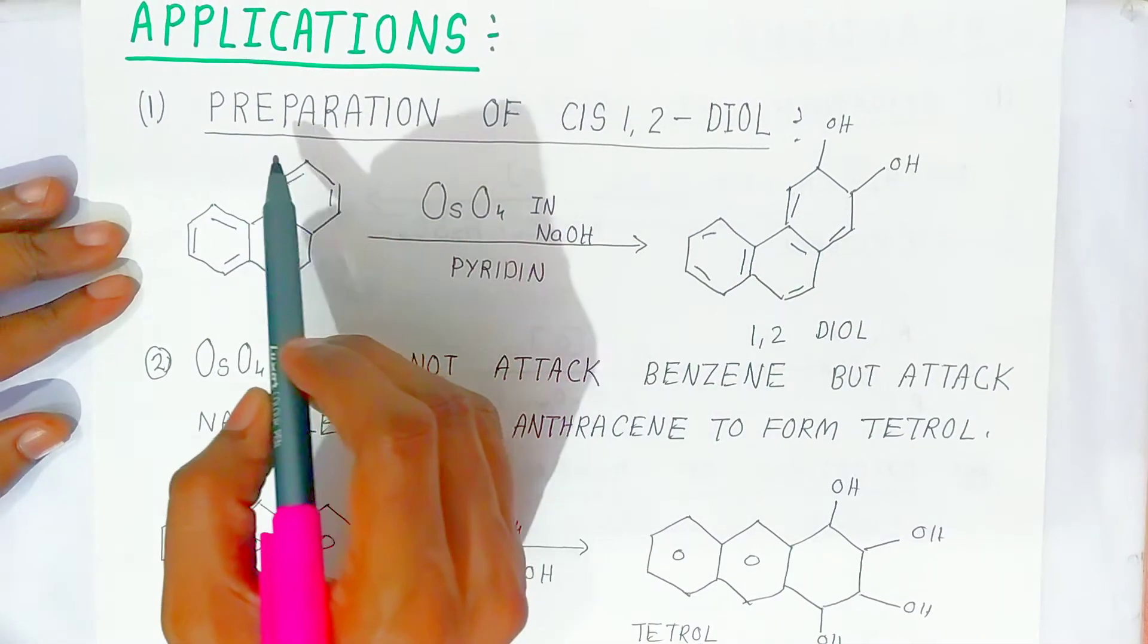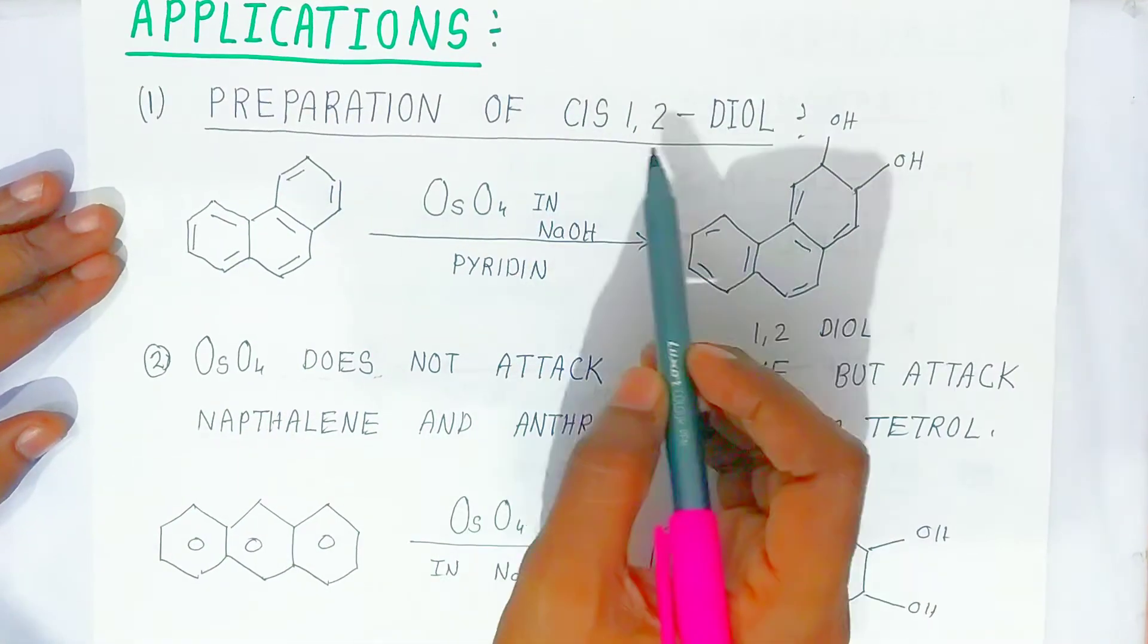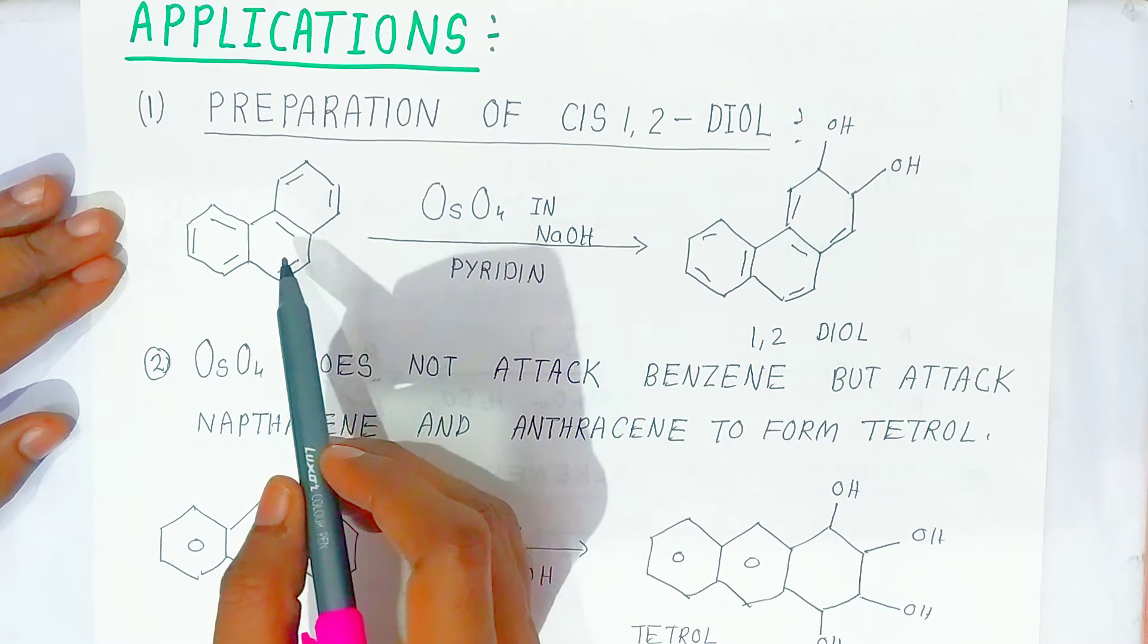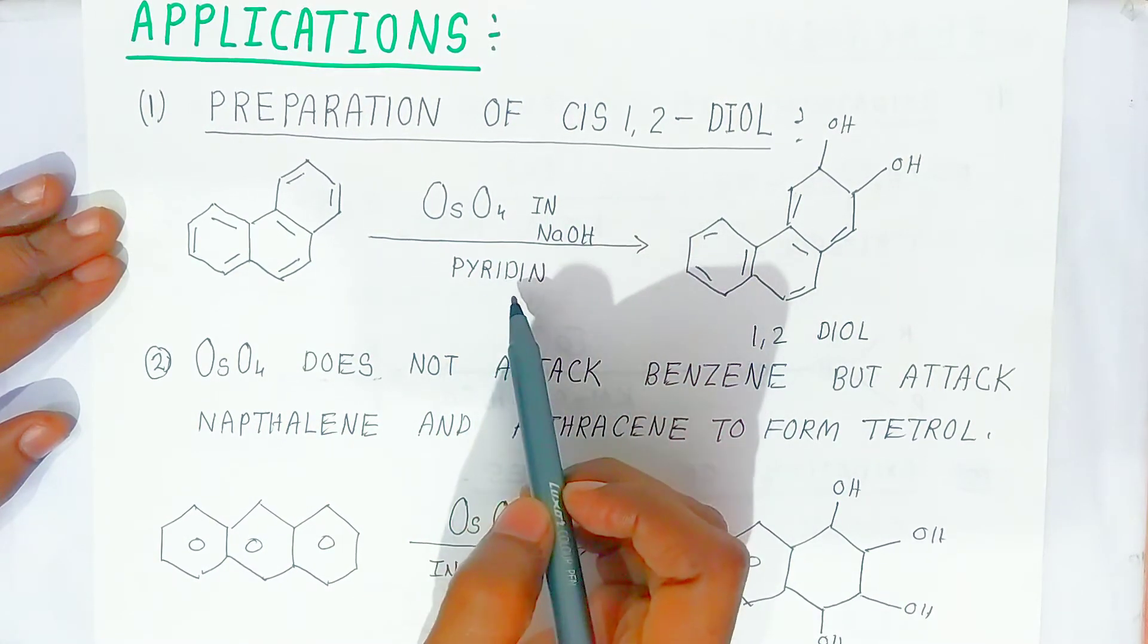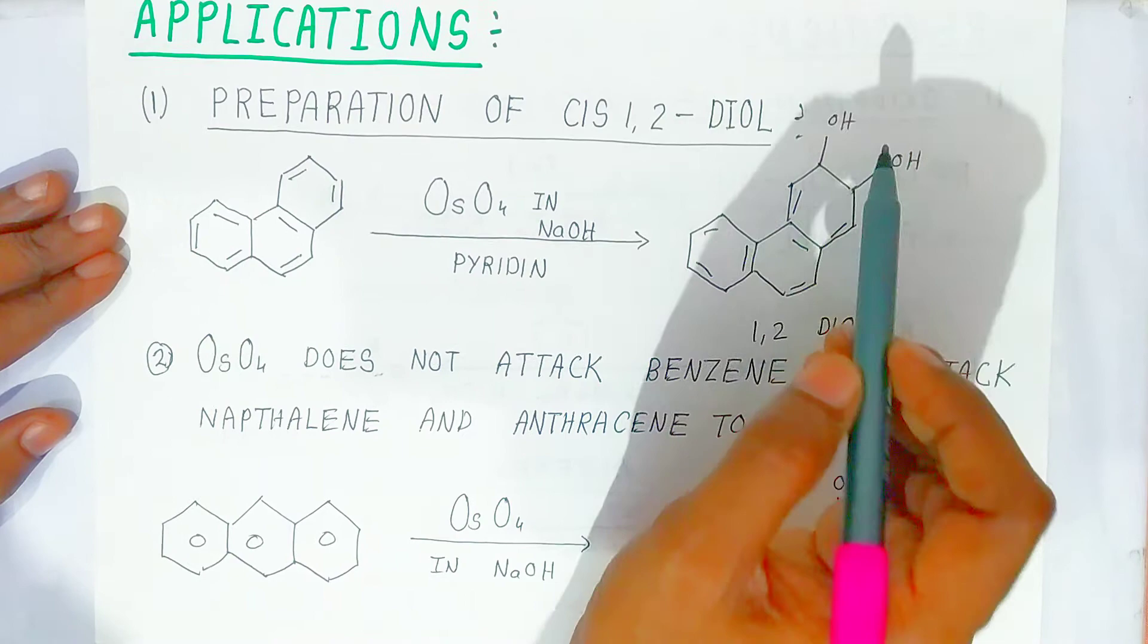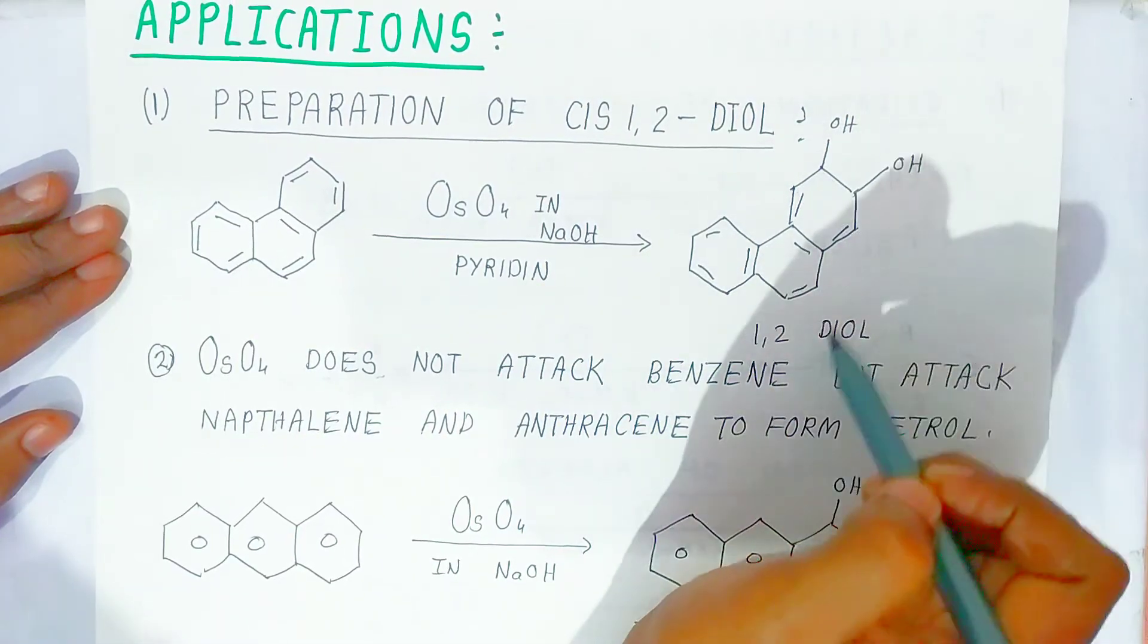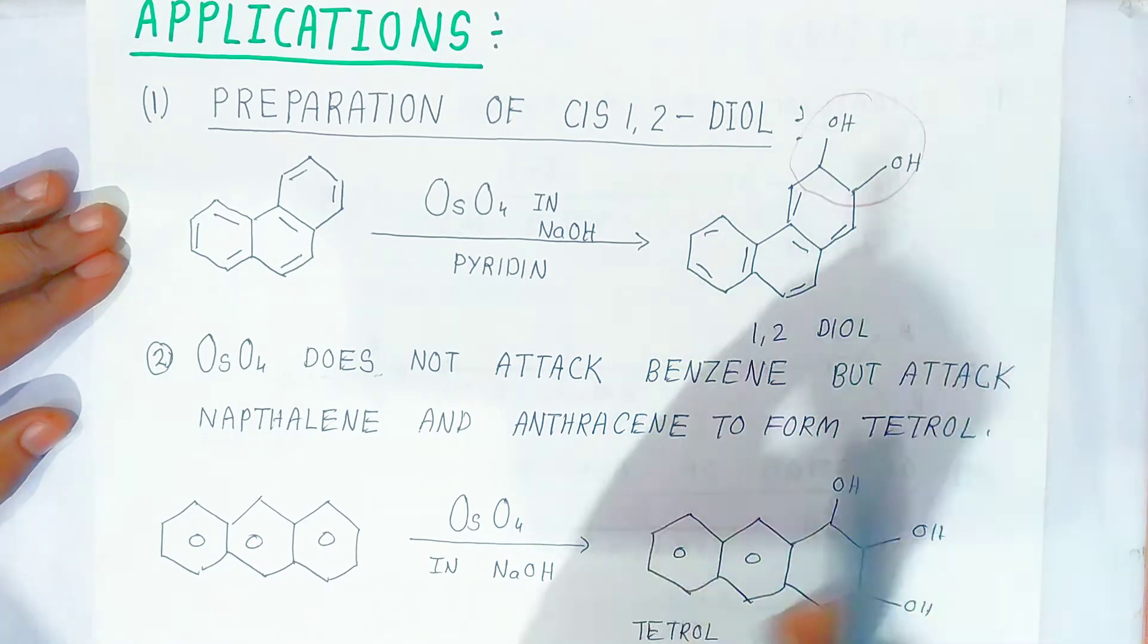Now we are going to see the applications. First application is in the preparation of cis 1,2-diol that we have seen. Here students, the compound in presence of osmium tetroxide in aqueous NaOH in pyridine is converted into what? The double bonded compound is converted into 1,2-diol.